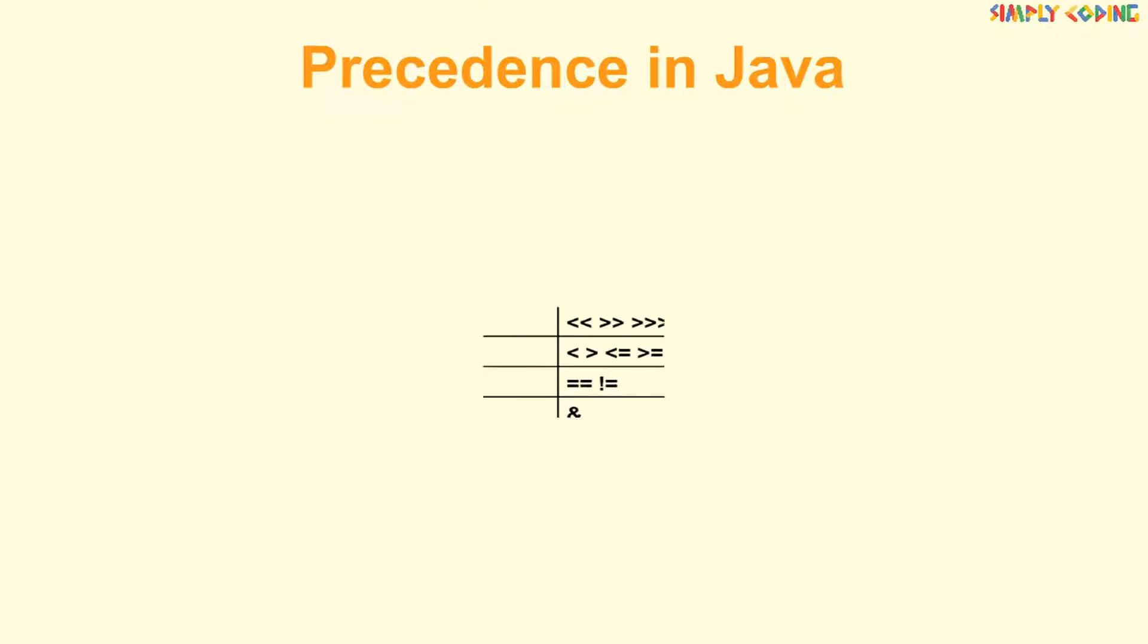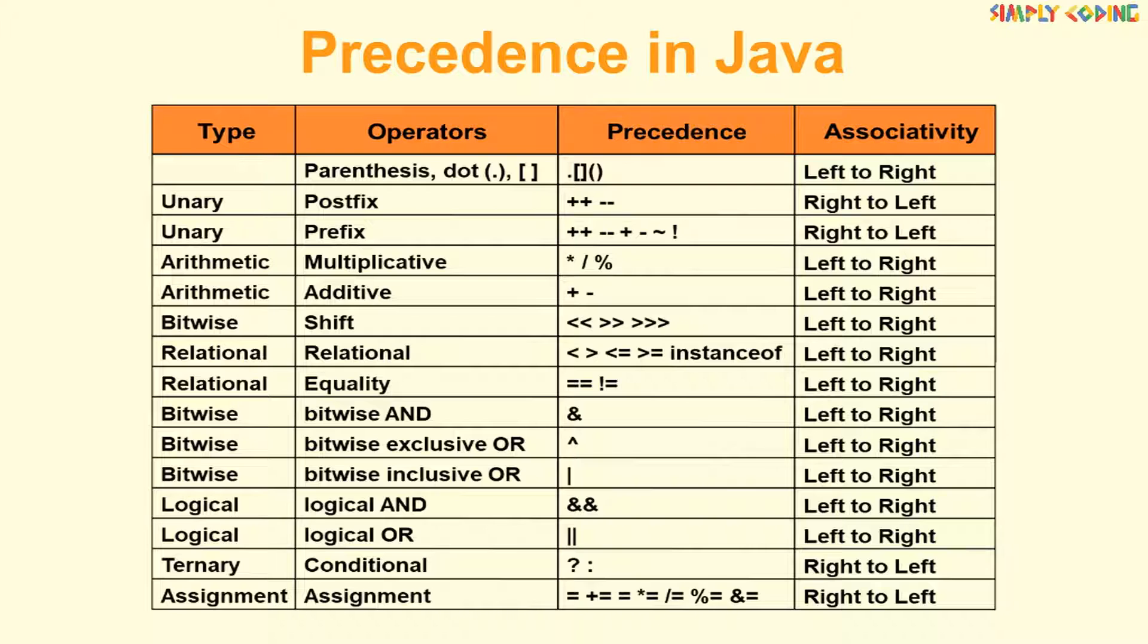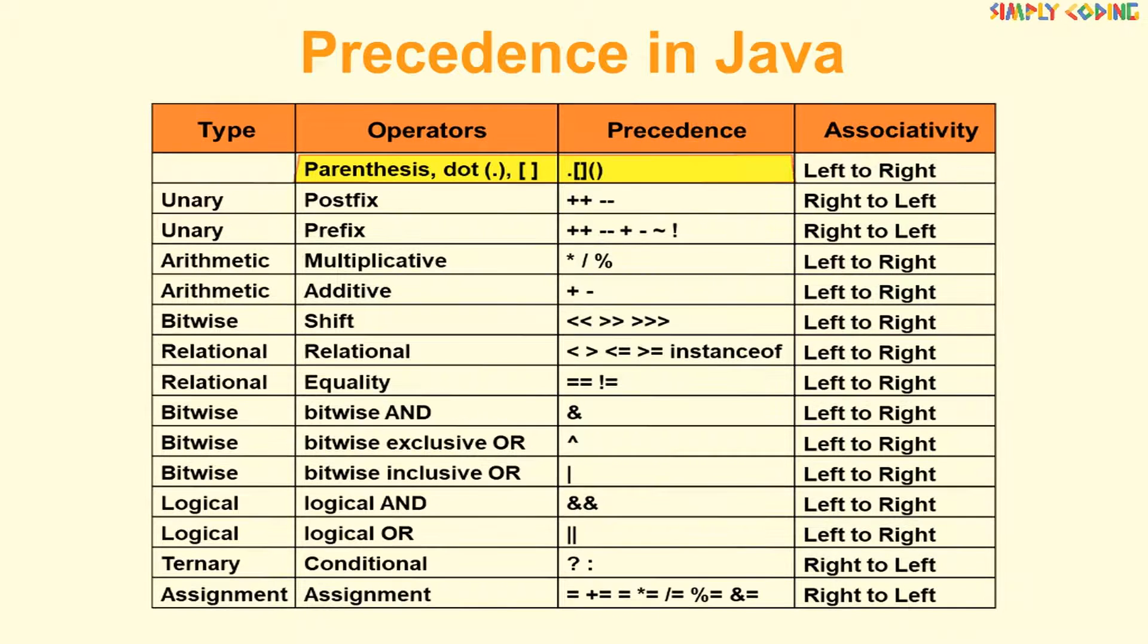Let's see the precedence order in Java. The topmost precedence is of parenthesis, which is used to group expressions and overrides everything else. Next is dot, which is used in objects, and brackets used for arrays. After that comes postfix increment and decrement operator, followed by prefix and unary.